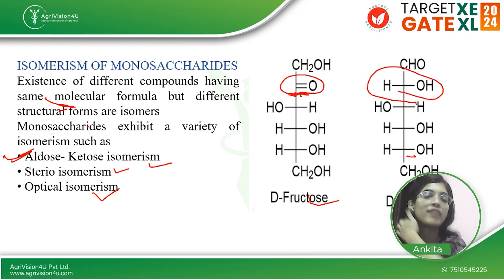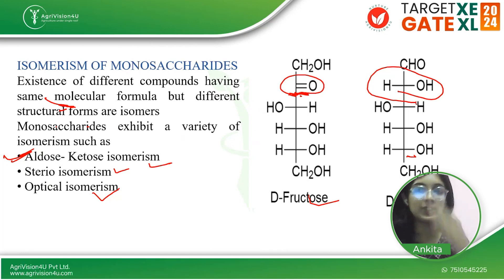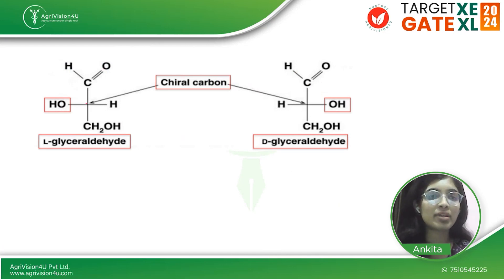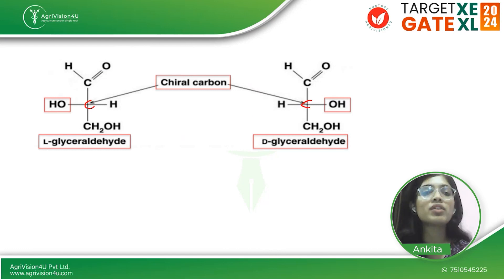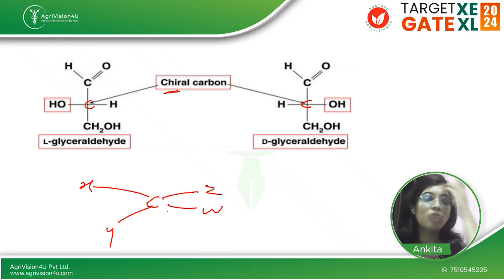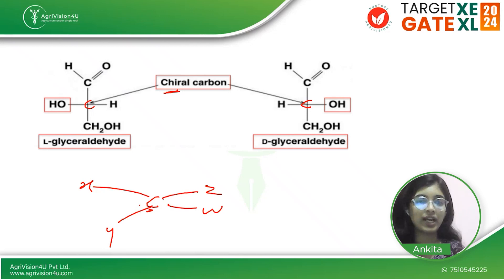The second type of isomerism involves optical activity and stereoisomerism. When a compound has optical activity, it contains a chiral carbon. A chiral carbon is one where all four groups attached to it are different — represented as x, y, z, w — satisfying the valency of four with four distinct molecules.